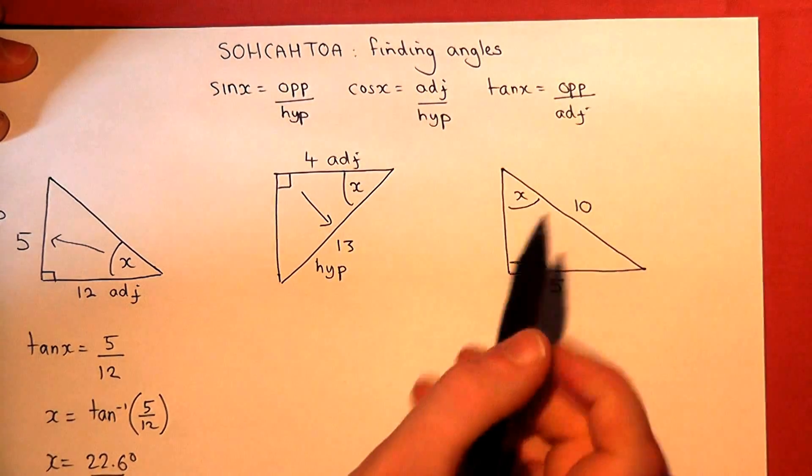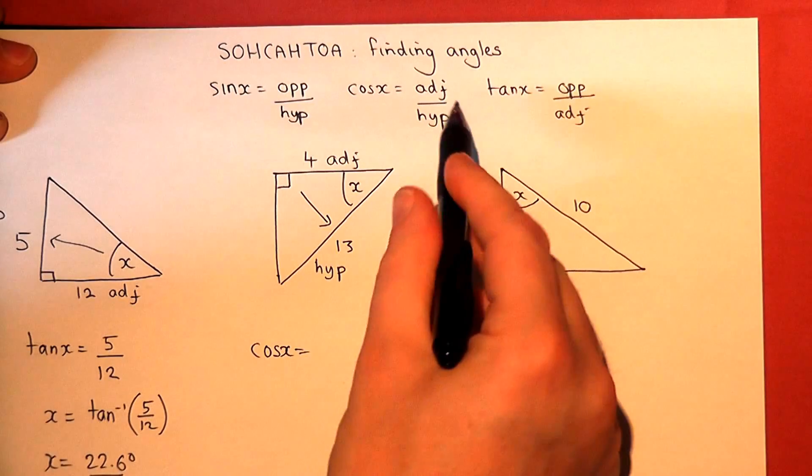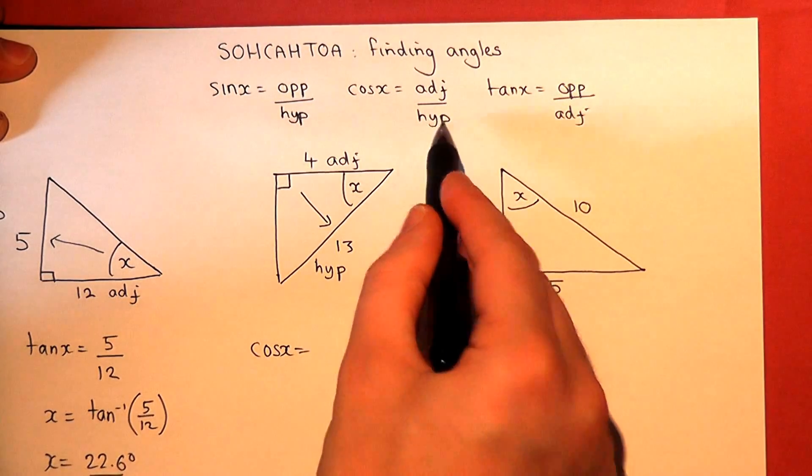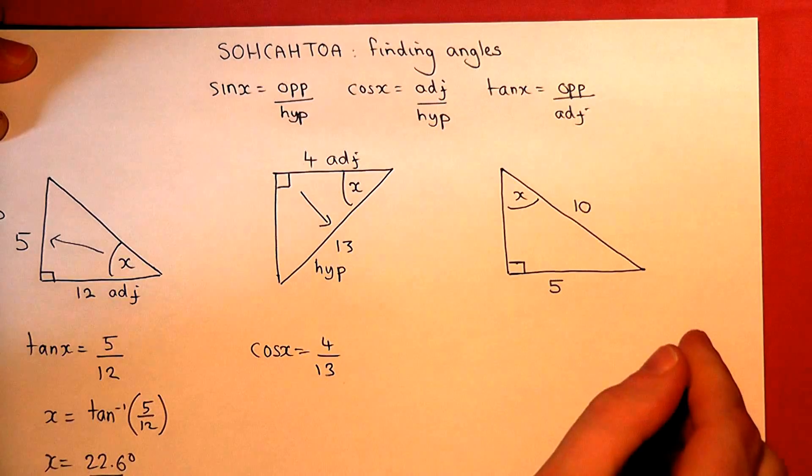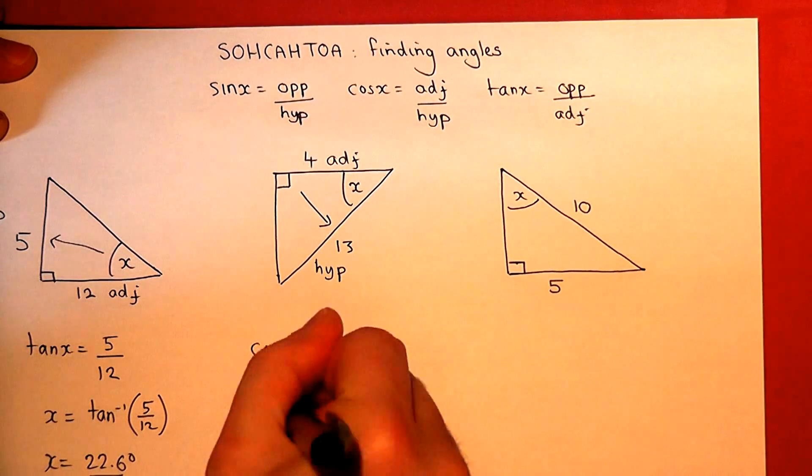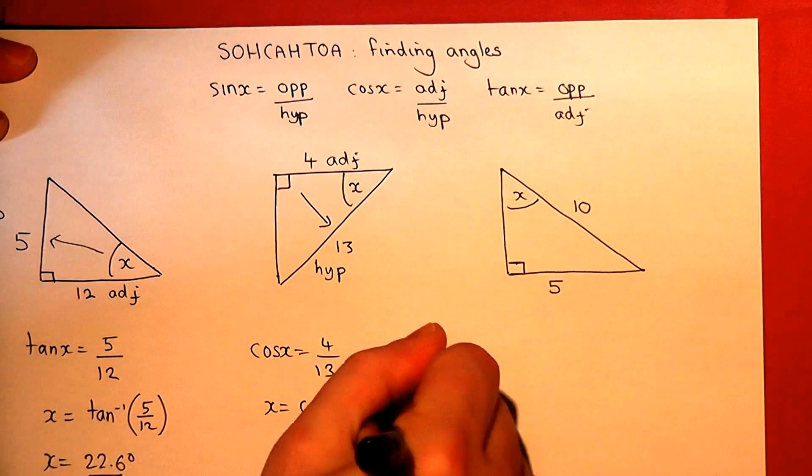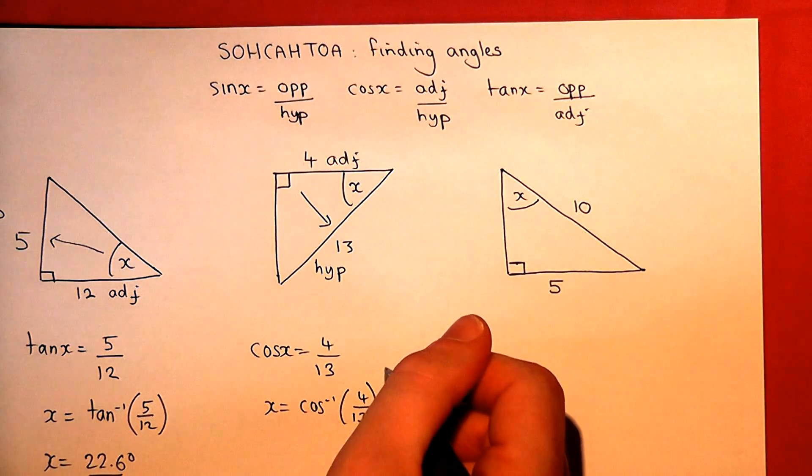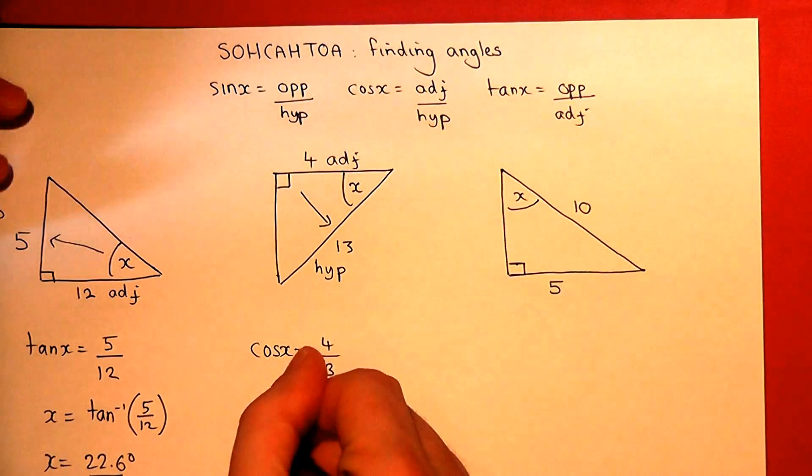So cos of x is equal to adjacent over hypotenuse. Adjacent over hypotenuse, so 4 thirteenths. So to find x, we do the inverse cos of 4 over 13. So we put that into our calculator. Inverse cos of 4 divided by 13. And we get 72.1 degrees.